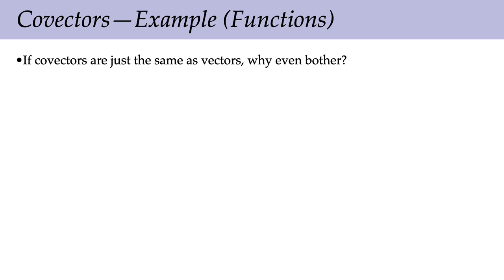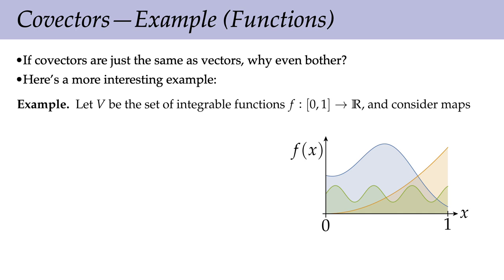You might still ask: what's the big fuss? Why make such a big deal about the difference between a vector and a co-vector if they both just look like lists of numbers? Here's a more interesting example. This time we're going to look at a vector space that's very different: real-valued functions on the unit interval that have a well-defined integral. This doesn't sound like a vector space, but I can add two such functions and get another integrable function, and I can scale it — so why shouldn't I call them vectors? This is a perfectly good vector space.